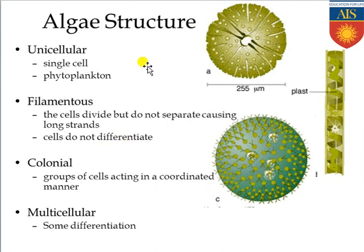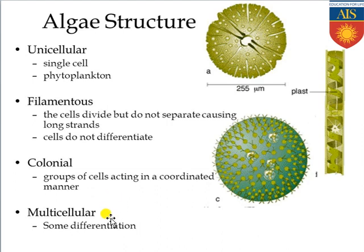Another category is colonial algae. Keep in mind these algae are present in a mass in a coordinated manner because they coordinate with each other. And there is another type, multicellular algae, in which some differentiation can be found, and that is why the multicellular structure has been formed.